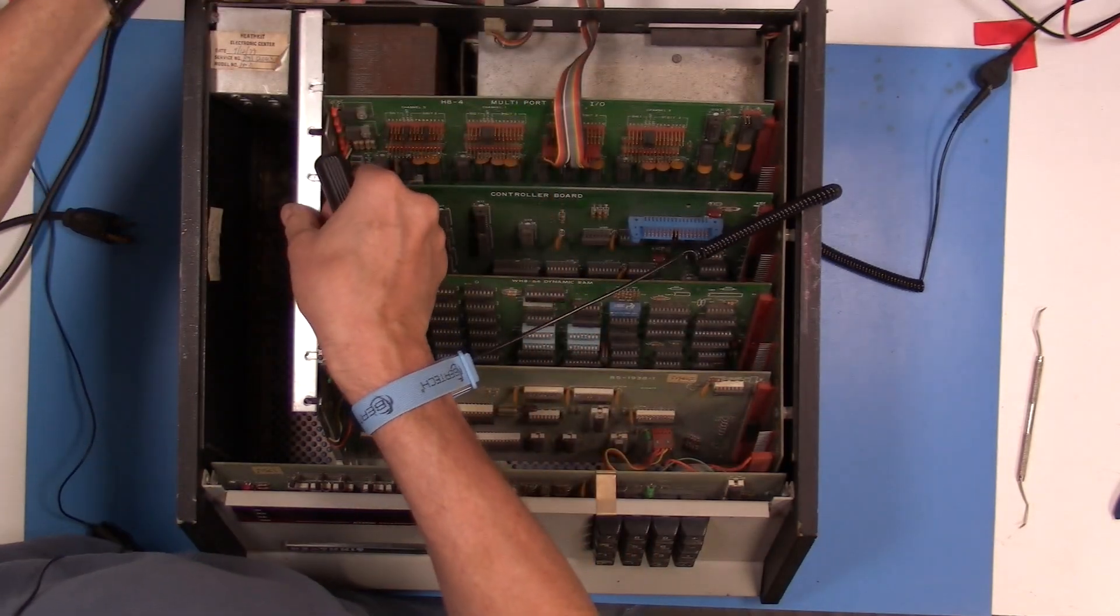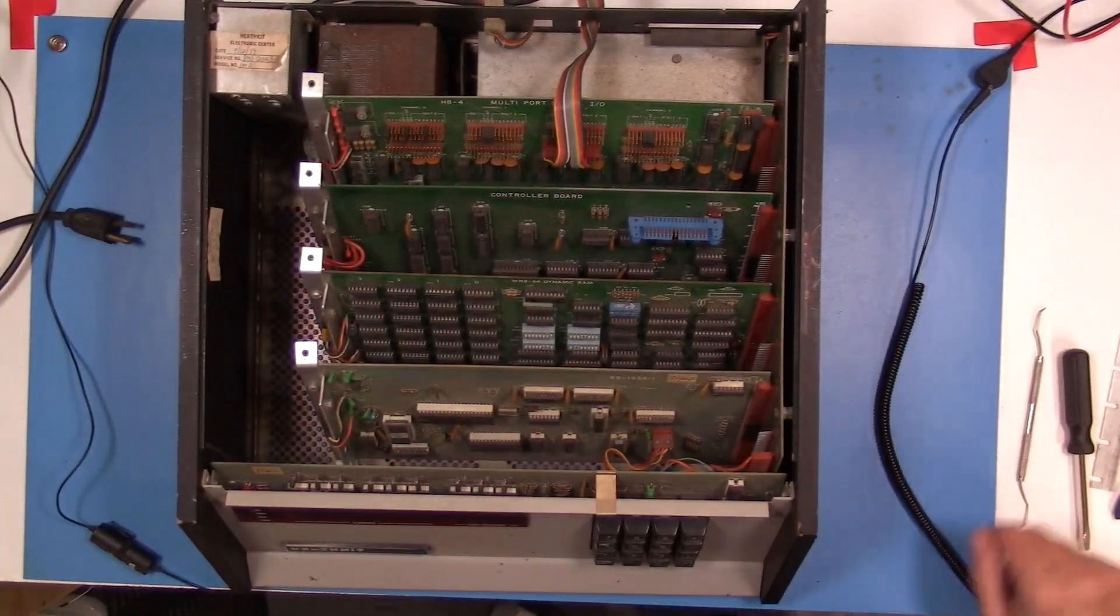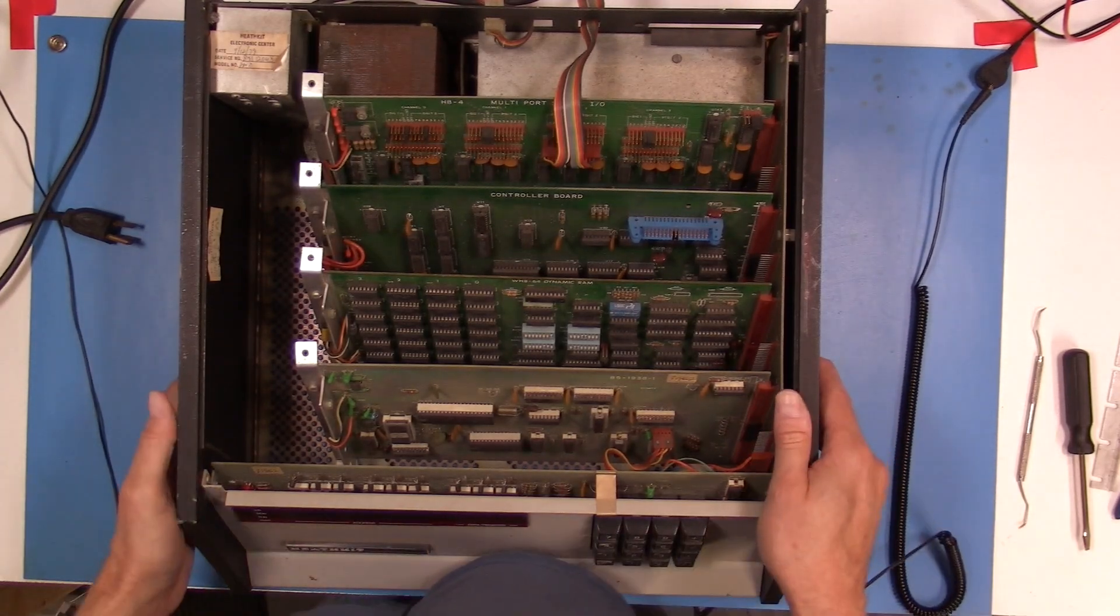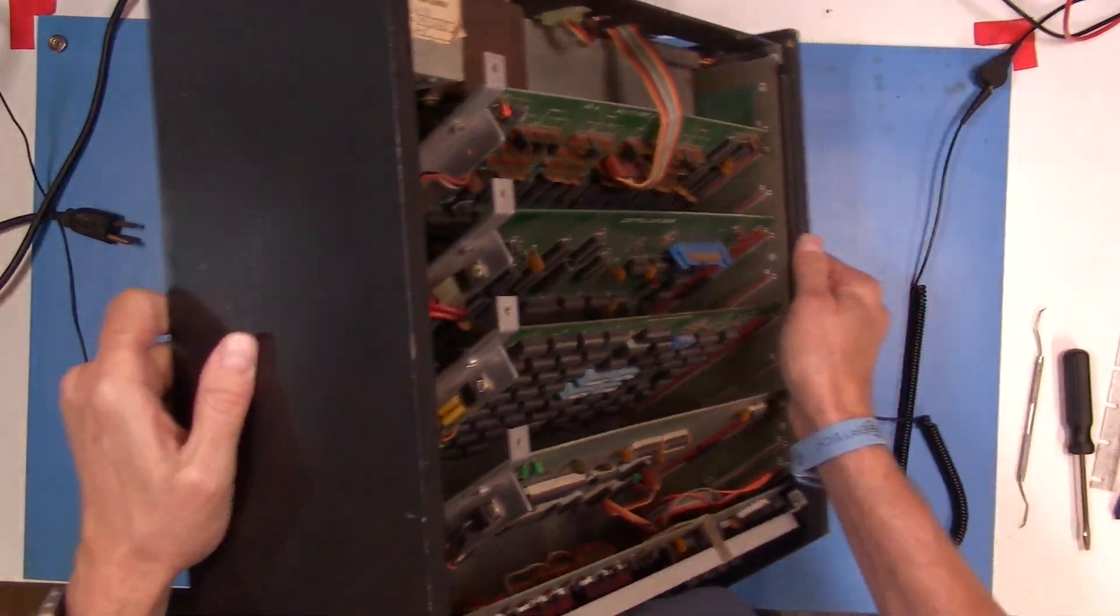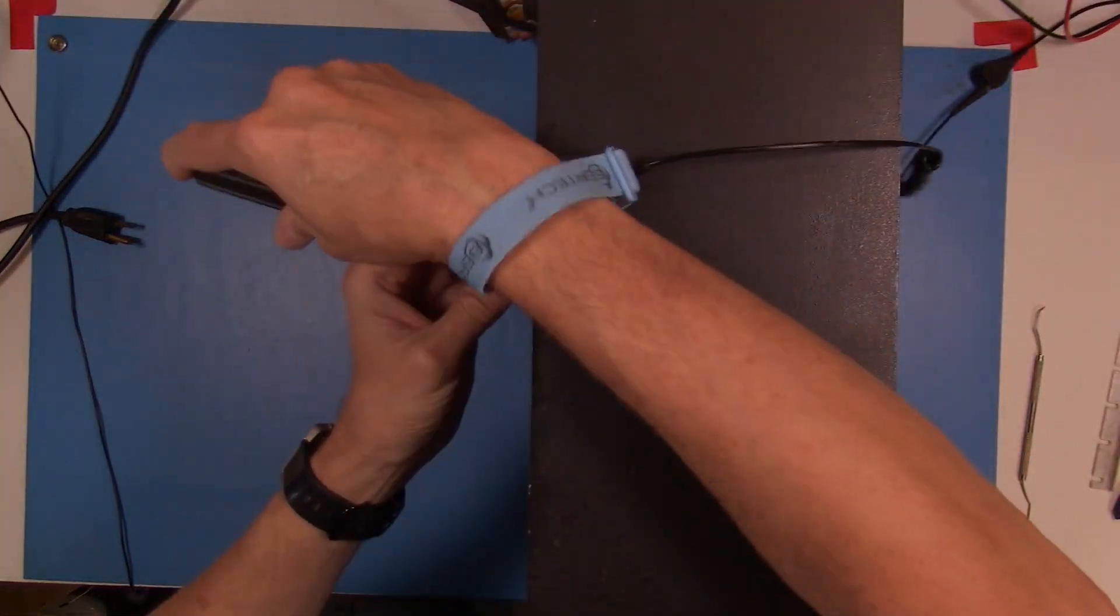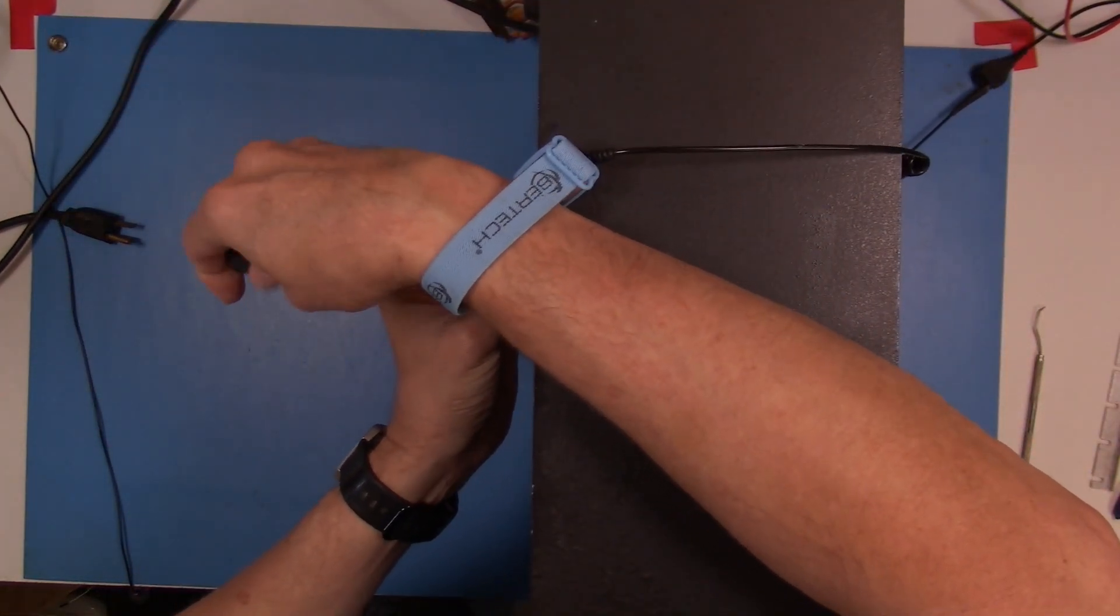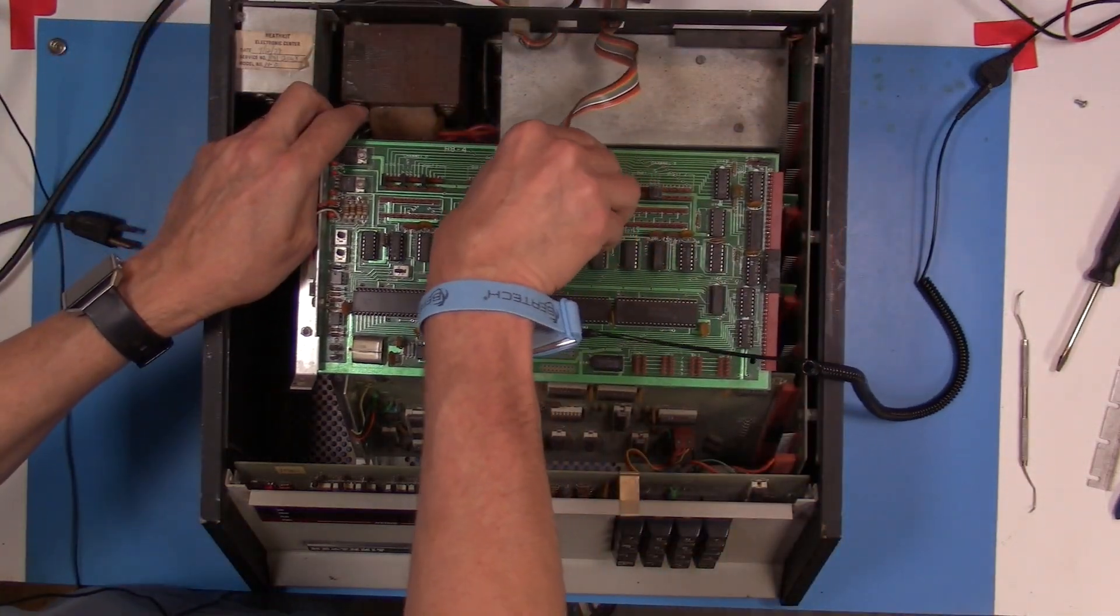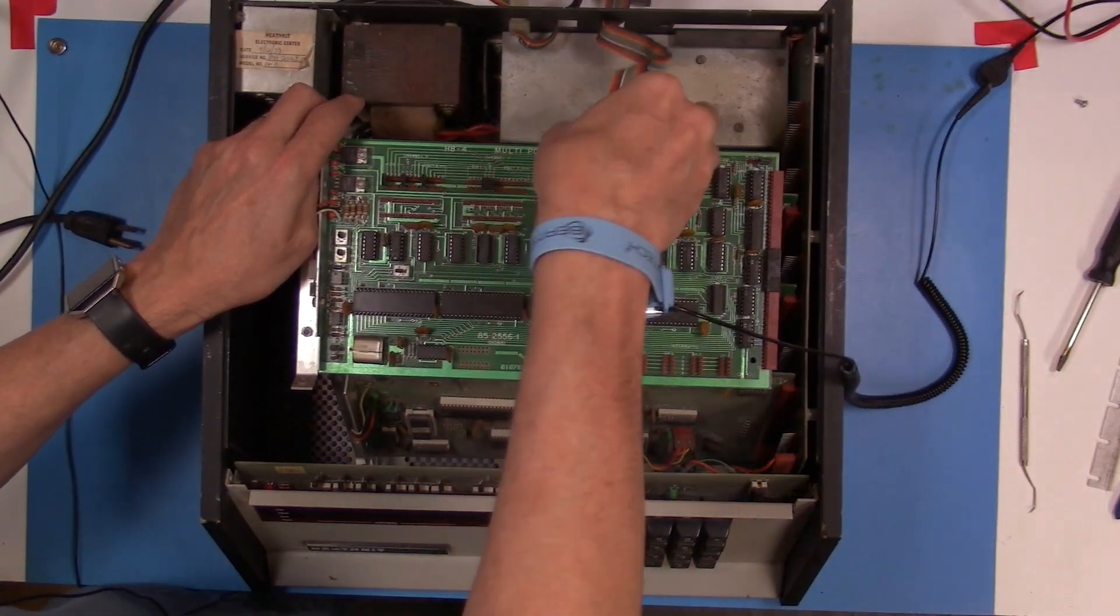Let's go ahead and get all of the rest of the cards out of the system. This H8 is configured with just four cards. It has, of course, the CPU card, well, five cards if you include the panel. It has a 64K memory card and the disk controller card, and it also has a four-port, multi-port adapter.